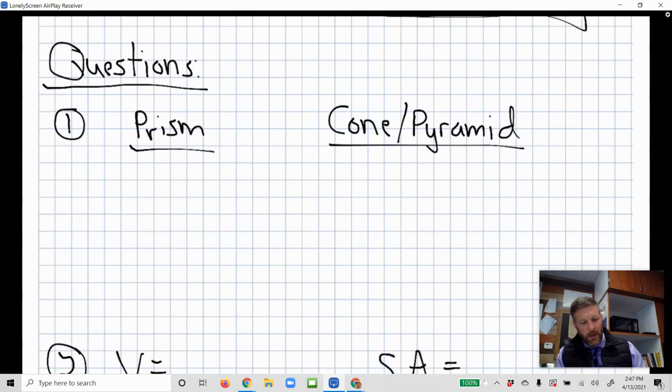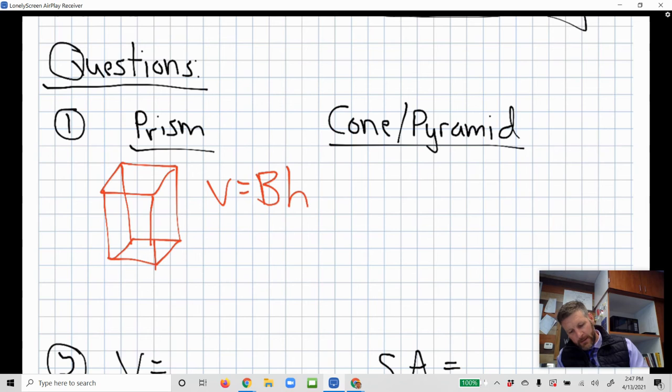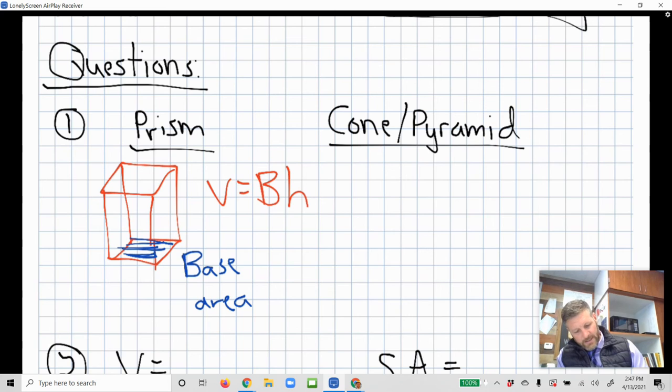Just a couple questions now. Number one, what is the difference between the volume formula for a prism and that of a cone or pyramid? Again, this is fairly simple and straightforward, but just to help you remember it, a prism has the two congruent bases. So it's congruent from top to bottom. So what you do is you just, the volume is simply base area times height. Because once you find this, that's your base area, then you're going to have that same amount stacked on top for whatever the height happens to be.